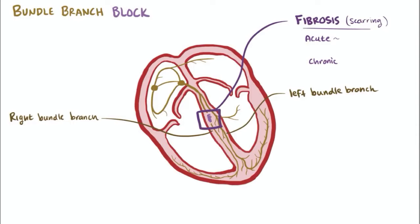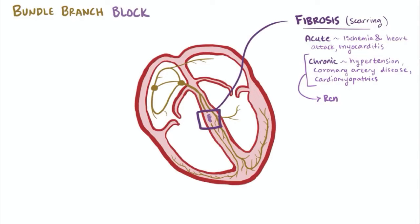Acute causes can be things like ischemia and heart attack, or myocarditis, inflammation of the heart tissue. Chronic conditions that might lead to fibrosis of the heart tissue include hypertension, coronary artery disease, and cardiomyopathies, because they can all cause slow and steady remodeling of the heart muscle.